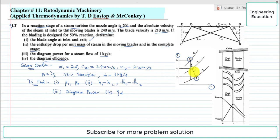In this specific case, for the complete stage the enthalpy drop is two times that of the enthalpy drop in the moving blades, because the blading is 50% reaction.